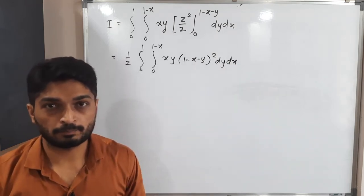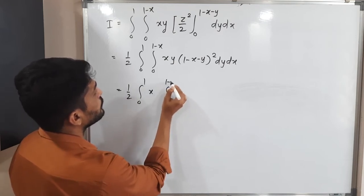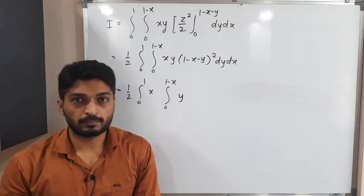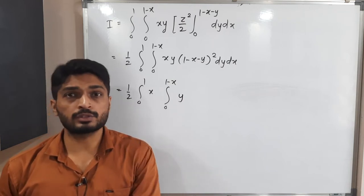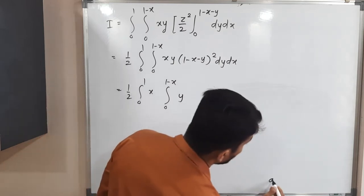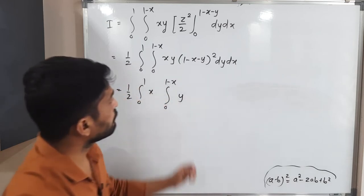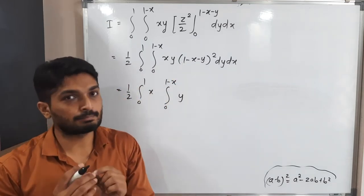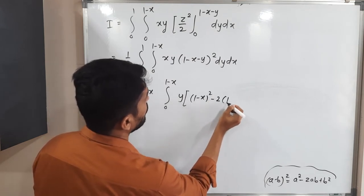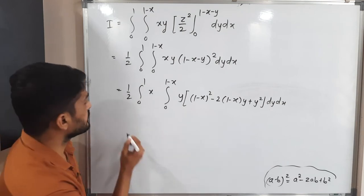Taking 1/2 as a constant outside the integral, we have (1/2) ∫₀¹ x [ ∫₀^(1−x) y·(1 − x − y)² dy ] dx. Since there is a bracket squared with y outside, we cannot integrate directly. We expand using (a − b)² = a² − 2ab + b², where a = 1 − x and b = y, giving (1 − x)² − 2(1 − x)y + y².